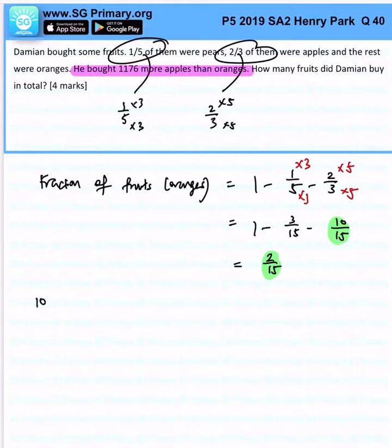10 over 15 minus 2 over 15, it represents how much? 1,176. So 8 over 15 of fruits is 1,176.